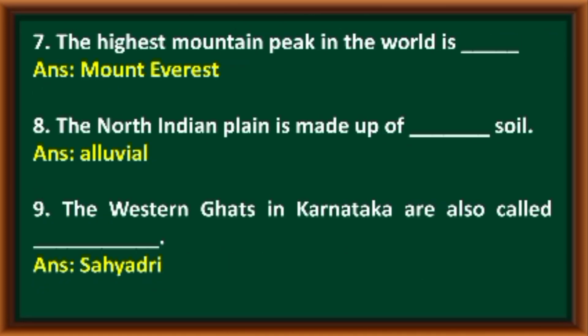The highest mountain peak in the world is Mount Everest. The North Indian plain is made up of alluvial soil. The Western Ghats in Karnataka are also called Sahyadri.